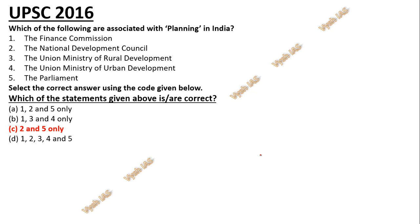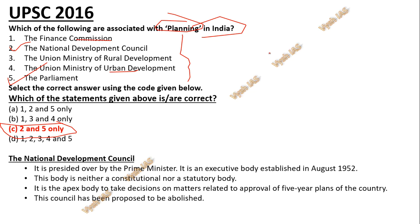Now the answers to the two questions. For the first question — which are associated with planning in India — UPSC's answer key says only options 2 and 5: the National Development Council and the Parliament. The others are for specific rural or urban work, and the Finance Commission is only for distributing tax revenue between centre and states. The National Development Council is presided over by the Prime Minister, is an executive body established in 1952, is neither constitutional nor statutory, and was the apex body for approving five-year plans. It has now been proposed to be abolished as NITI Aayog takes over that role.